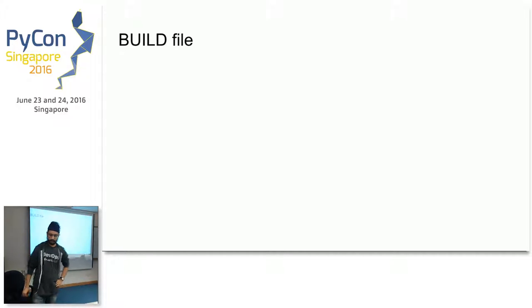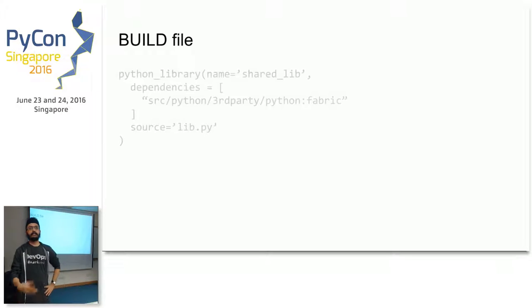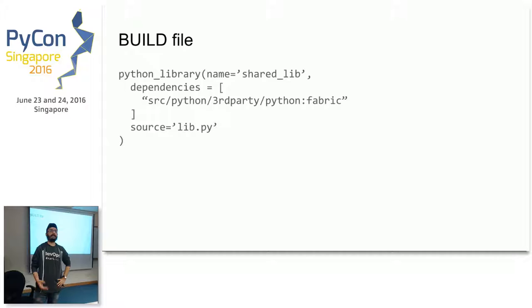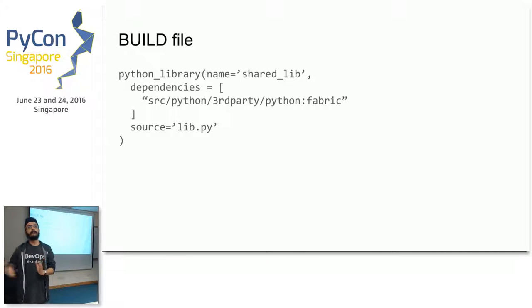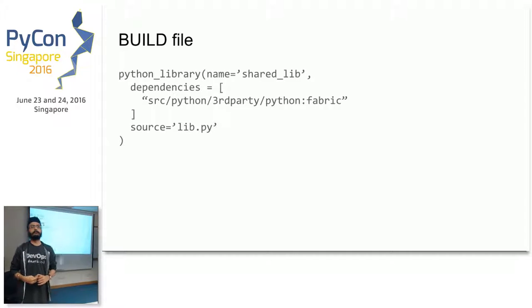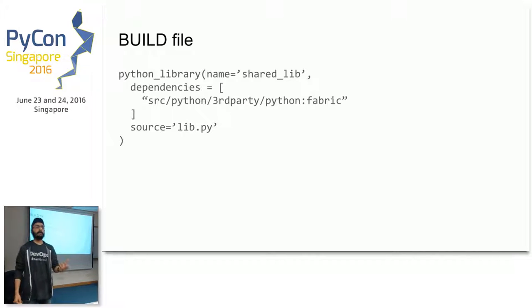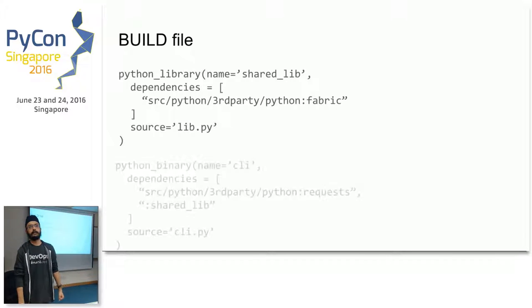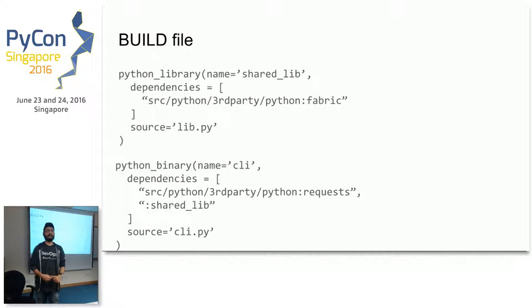Let's look at what a build file is. It's PANTS DSL but essentially a function call in the background. To build a Python library — say a shared library in 'lib.py' — you define its dependencies such as Fabric, specify the source file, and give it a name like 'shared_lib' that can be referenced by other targets. If you want to build a command-line interface wrapper on top of this library, you say Python binary, name CLI, and in the dependencies reference 'shared_lib'. PANTS can figure out the full dependency path and build files in order.